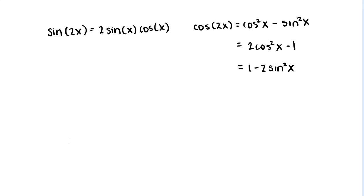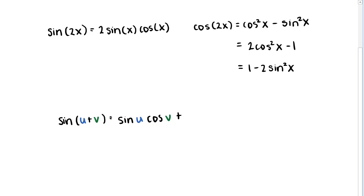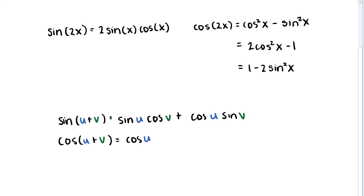Let me remind you what those are. Sine of the sum of two angles u and v is equal to sine of our first angle u, times cosine of our second angle, plus cosine of our first angle, times sine of our second angle. And our angle addition identity for cosine: cosine of u plus v equals cosine of our first angle times cosine of our second angle, take away sine of our first angle times sine of our second angle.